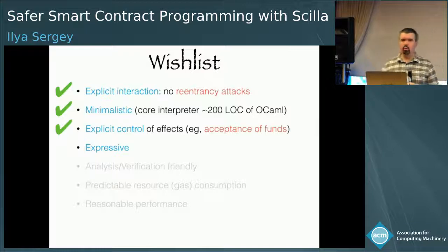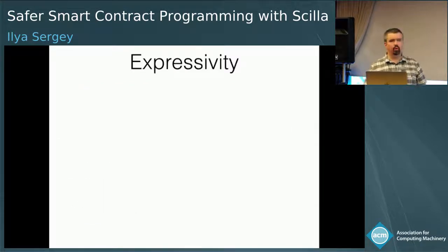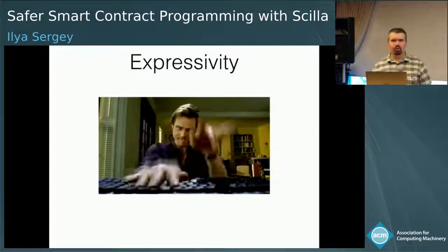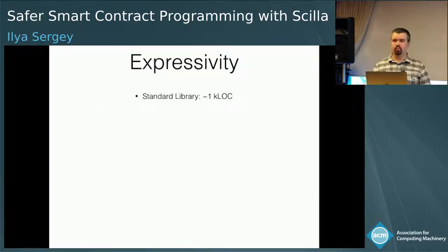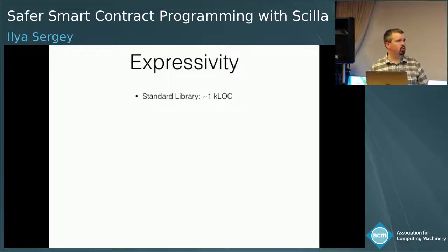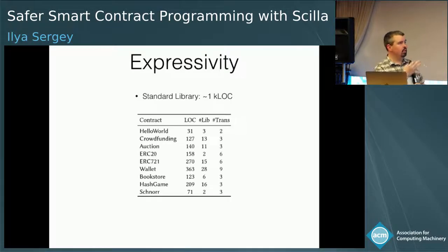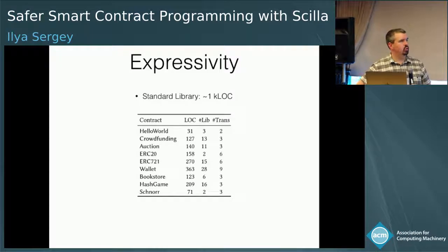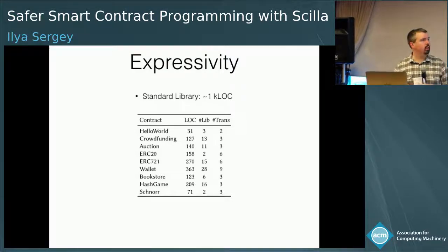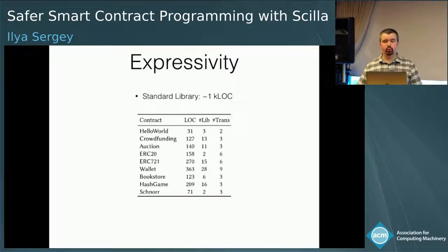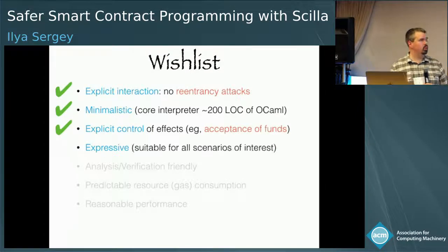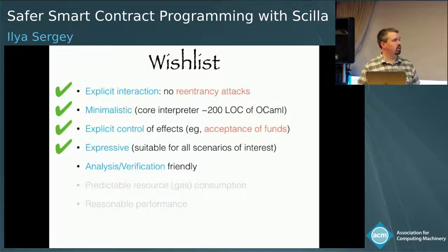Now that we have the language design, we need harder work to convince the community this is the language they want to program in. The only way to assess expressivity is to write code. Some code was written in-house, some by people without extensive computer science training. We wrote a standard library describing interactions with booleans, natural numbers, and standard collections. Then we wrote what we consider a representative selection: the 10 most popular contracts on the Ethereum blockchain in terms of how much their code has been copied, including familiar standards such as ERC20 and ERC721, which are smart contracts for different kinds of tokens. We considered the language expressive enough.